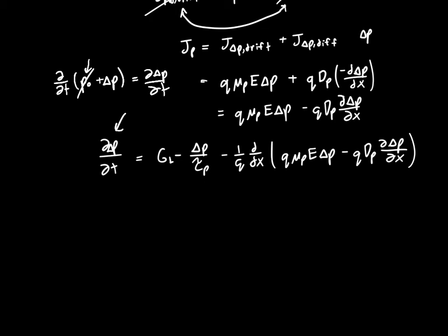All that remains is to simplify this equation. Let's cancel out these q's. So dp/dt equals, let's focus on the right hand term. If we take the derivative of the right hand term and multiply it by a negative, we get plus, because it's negative times a negative, Dp d squared delta p dx squared, so the second derivative.